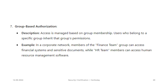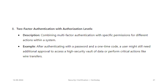Another method is group-based authorization, where access is managed based on group membership. Users who belong to a specific group inherit that group's permissions. For example, in a corporate network, members of the finance team group can access financial systems and sensitive documents, while HR team members can access human resource management software. We can also combine multi-factor authentication with specific permissions for different actions within a system — after authenticating with a password and a one-time code, a user might still need additional approval to access a high-security vault of data or perform critical actions like wire transfers, as is done in many banks.